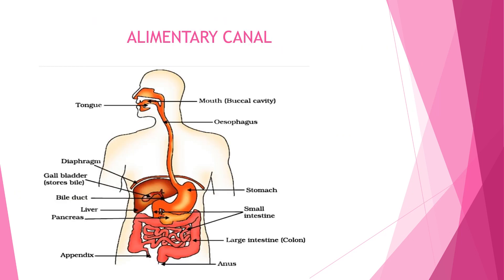This is the diagram of the alimentary canal. It starts from the mouth and ends with the anus. This is the buccal cavity, followed by the esophagus, then the stomach, then the small intestine, which opens into the large intestine, which ends with the anus.